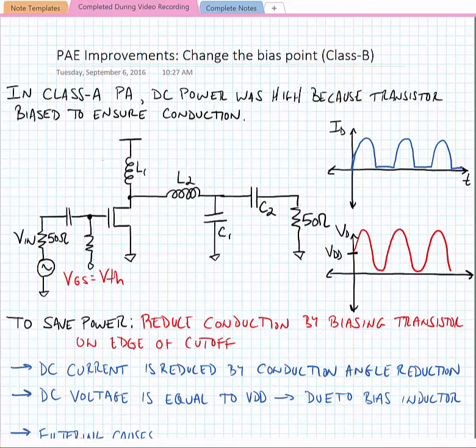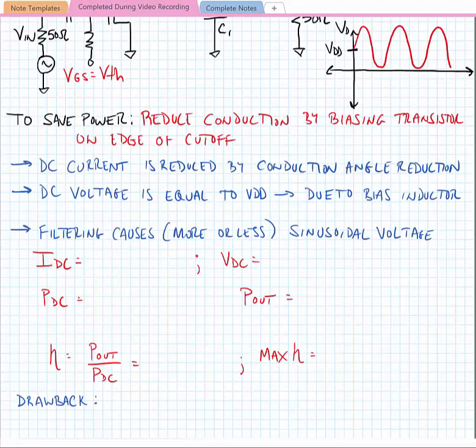So again, if we look at the DC current, it's reduced by this conduction angle reduction, while the DC voltage is equal to VDD and this is because it's biased through an inductor. So the drain voltage has to have an average value of VDD due to this DC short. So the filtering of the matching network causes a more or less sinusoidal voltage at the drain.